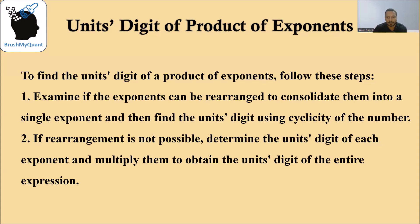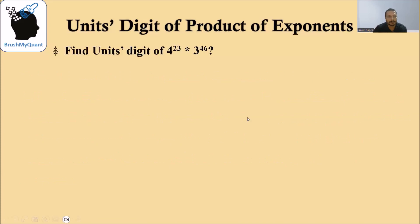Let's take an example to understand how to solve this. Find the units digit of 4 raised to 23 multiplied by 3 raised to 46. Note that this power is 23 and this power is 46, which is 2 times 23.